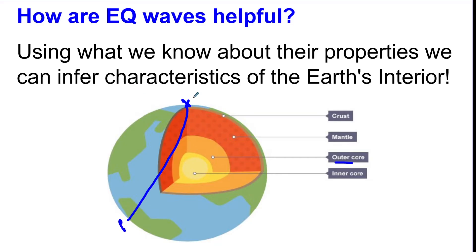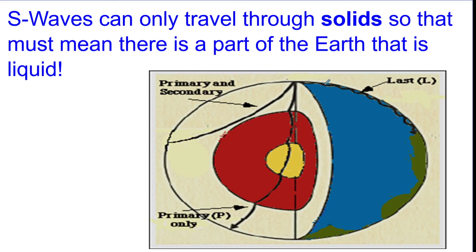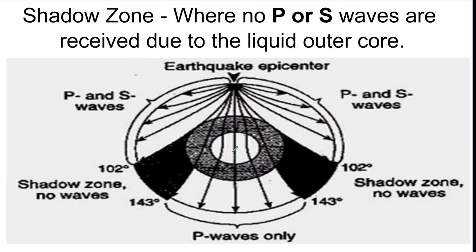The S wave actually goes straight through, but it stops and disappears once it hits the liquid, because the S wave can only go through a solid. With this pattern happening all over the planet, sometimes there's an area where you don't get any waves — that's called the shadow zone. If the earthquake happened up here, the P wave refracts and the S wave gets absorbed, so on that spot on the Earth, no wave came through. That's called the shadow zone.